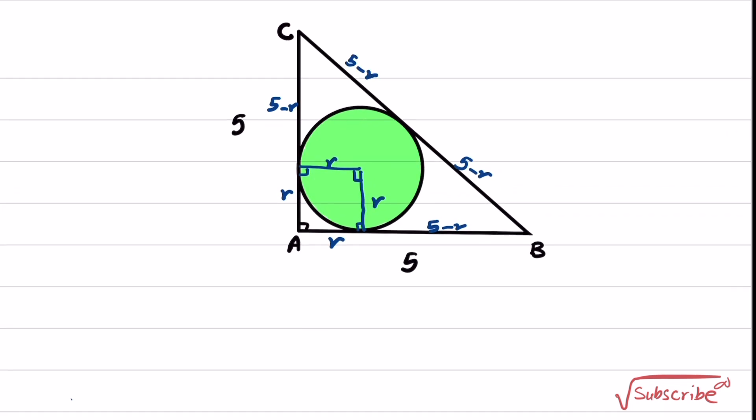Now let's try to find the value of r. For a right triangle, we know that AB squared plus AC squared equals to BC squared. So AB is equal to 5, 5 squared plus AC equals to 5. It is again 5 squared equals to BC squared. And from this, we know that BC is equal to 5 times square root of 2.